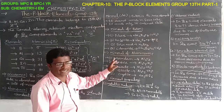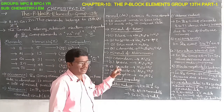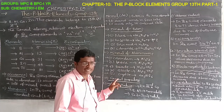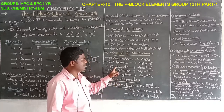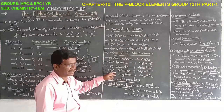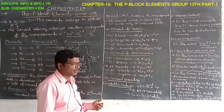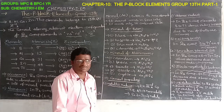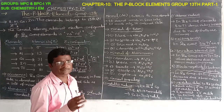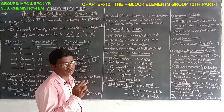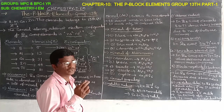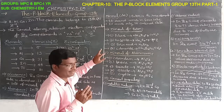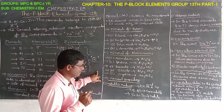Recap of aluminium minerals: corundum Al₂O₃; diaspore Al₂O₃·H₂O; bauxite Al₂O₃·2H₂O; gibbsite Al₂O₃·3H₂O; cryolite Na₃AlF₆. These are very important for exam questions — write the aluminium minerals and their formulas. Very very important for 13th group elements.